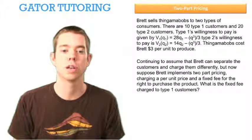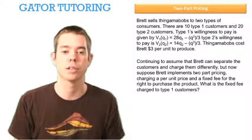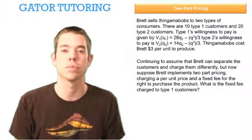Continuing to assume that Brett can separate customers and charge them differently, now suppose Brett implements two-part pricing, charging a per unit price and a fixed fee for the right to purchase the product. What is the fixed fee charged to type 1 customers?